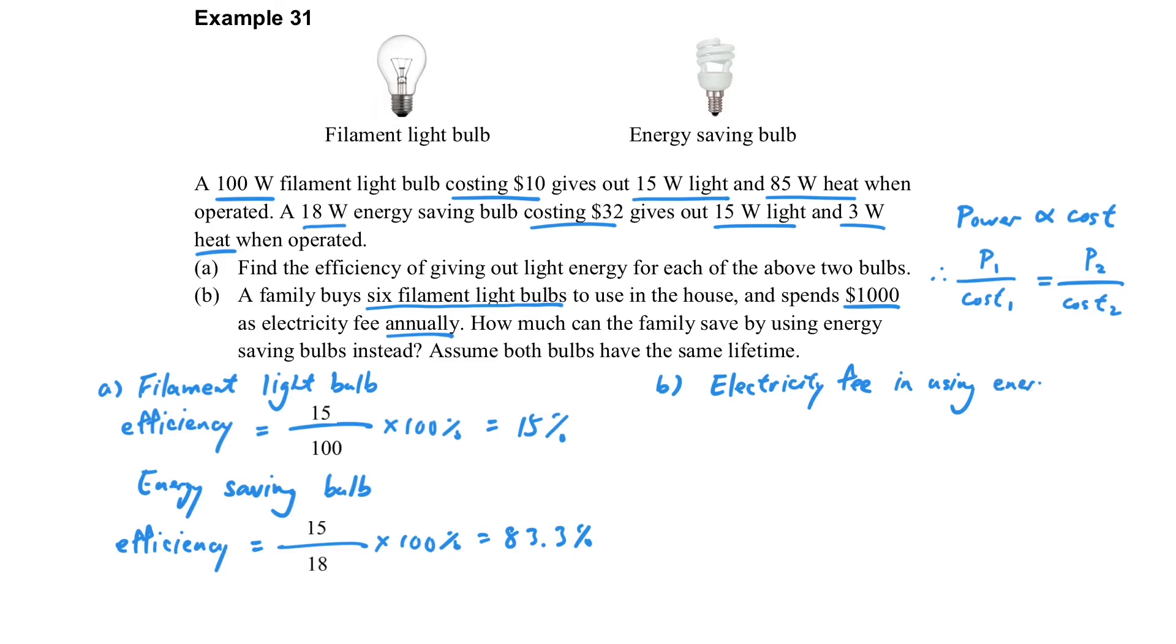The energy is proportional to the cost. And now, annually, that means both of them have the same time. The time is one year. So that's the power and the cost is directly proportional.